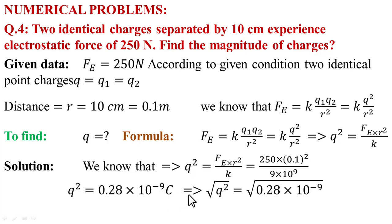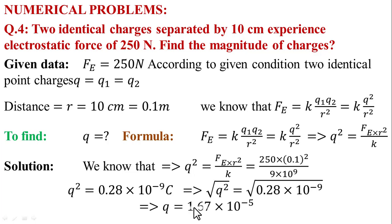Taking the square root of both sides, Q equals 1.67 multiplied by 10 raised to power minus 5 coulombs. For more videos, please subscribe to our channel and like our video. Best of luck. Take care. Bye-bye.